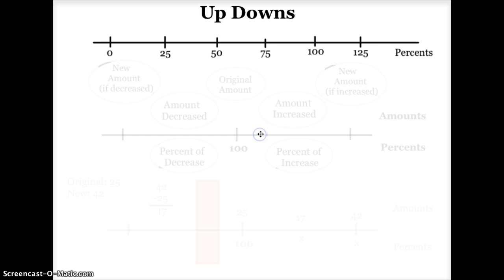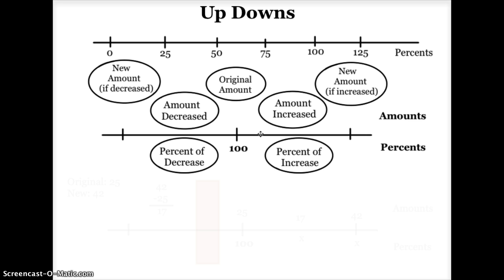Here's a table that's going to help you set up proportions for up-down problems. I want you to notice that my percents are in the bottom and my amounts are in the top. In the middle of my percent row, I have 100%, and directly above that, I have my original amount.